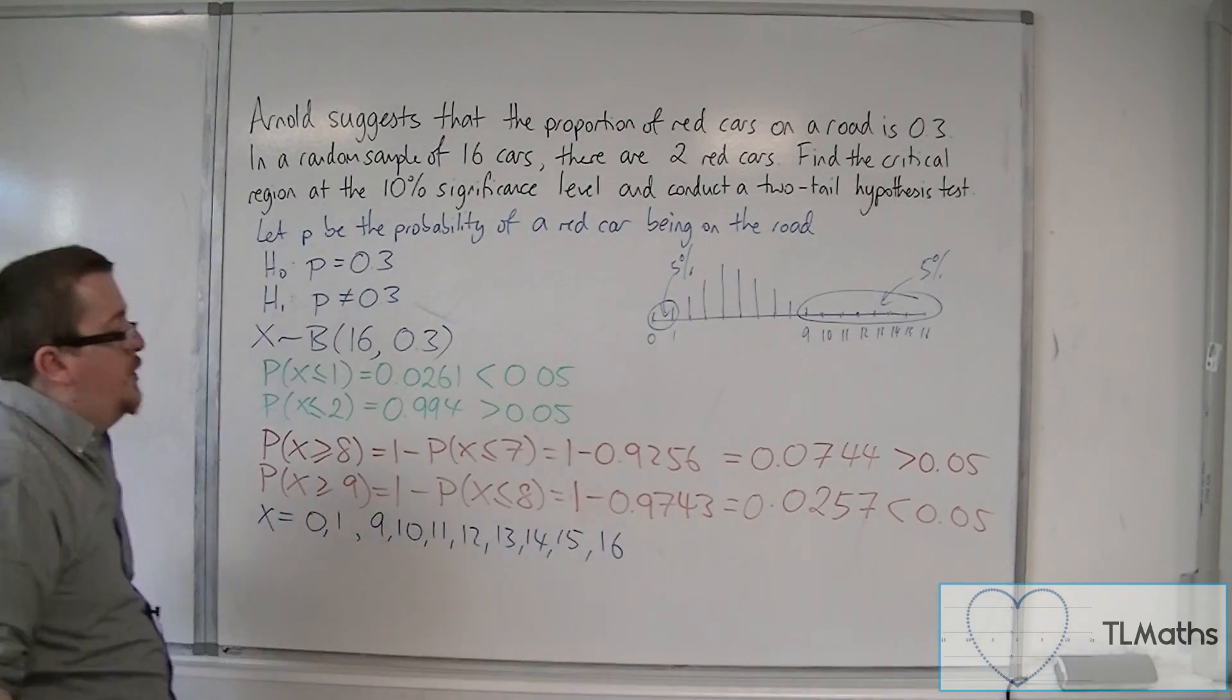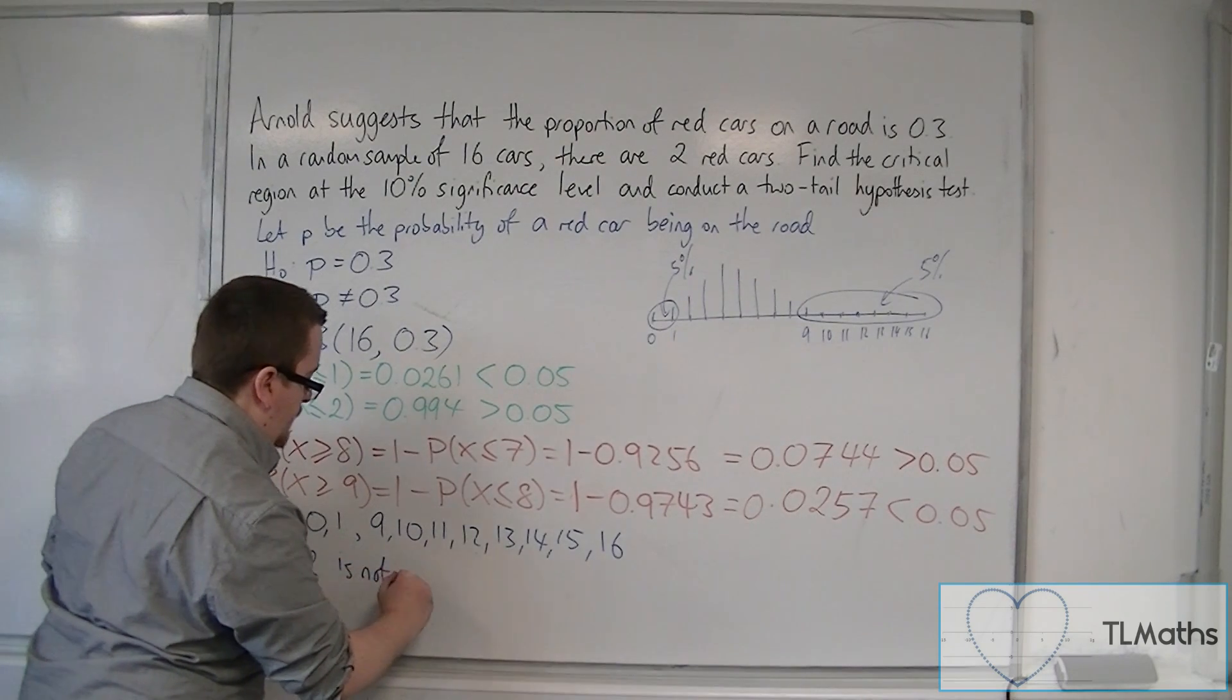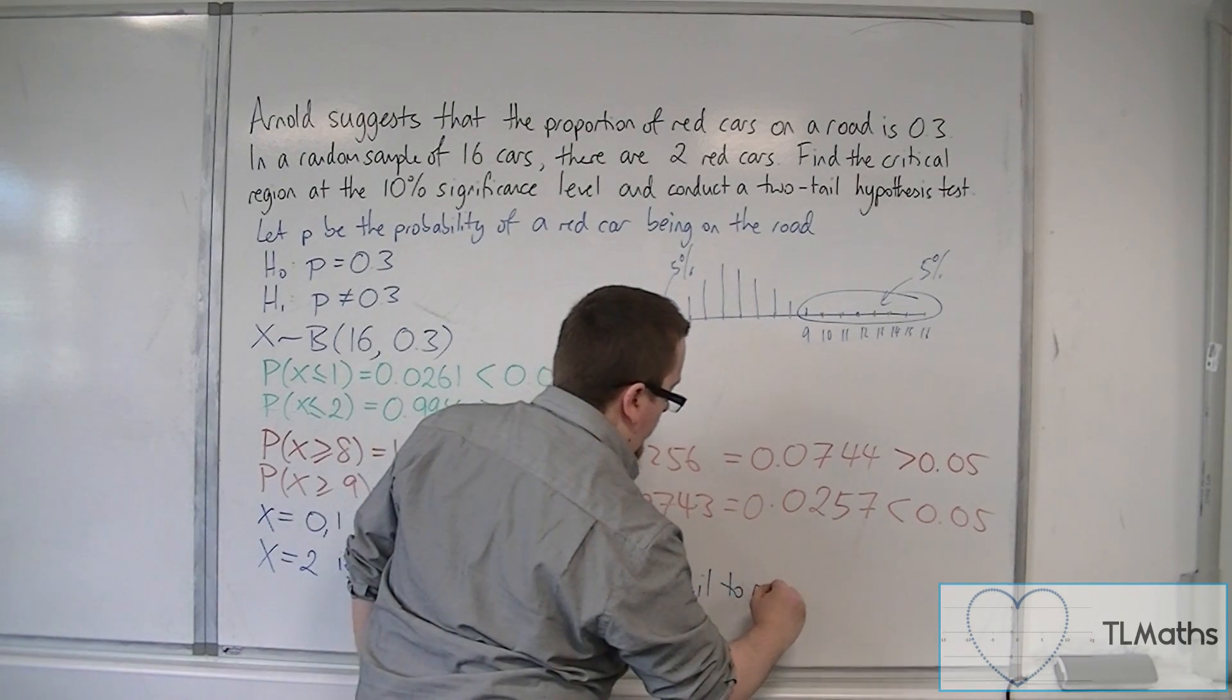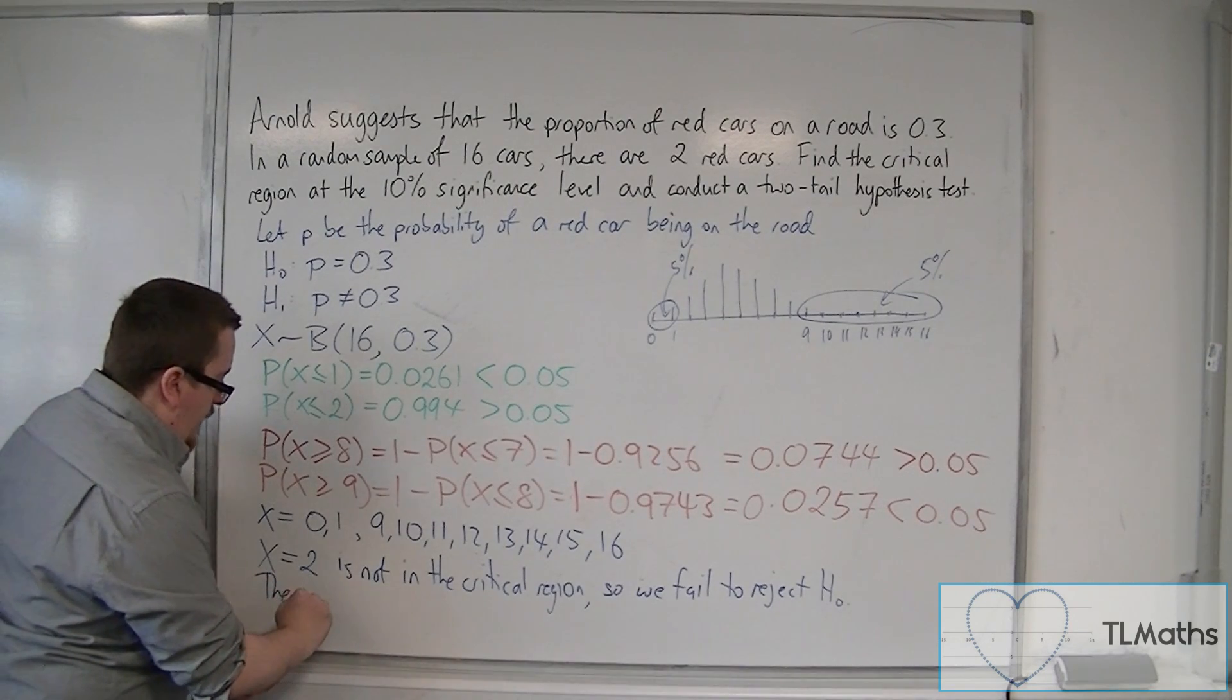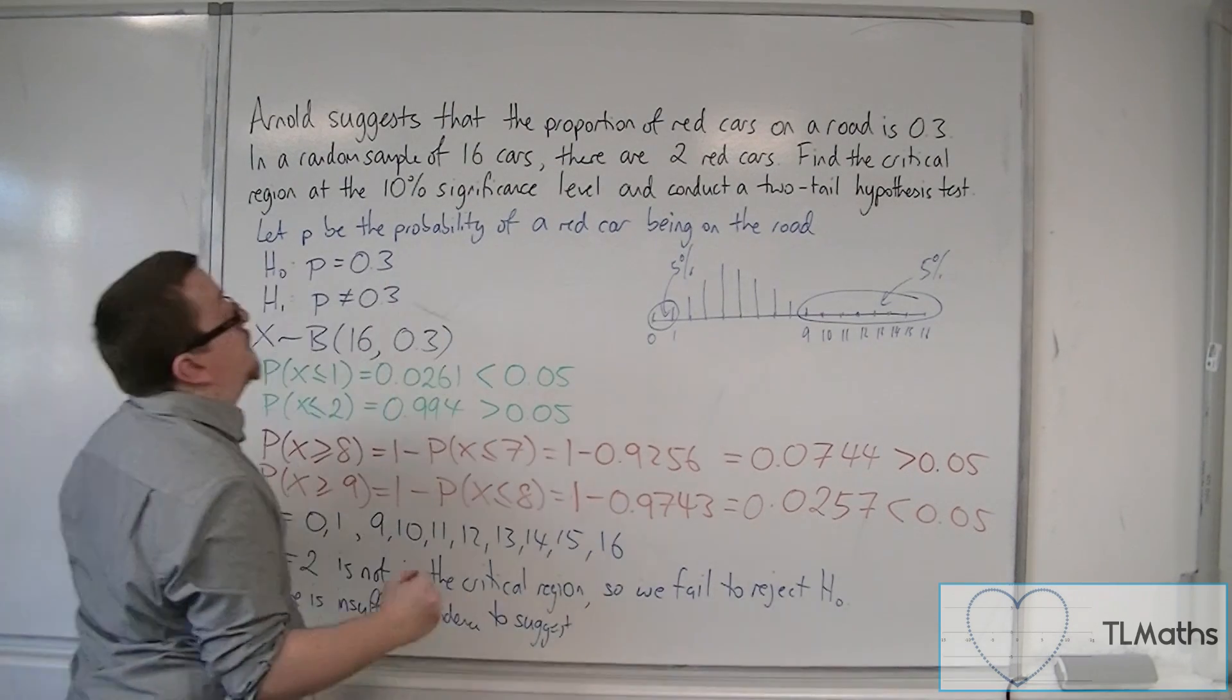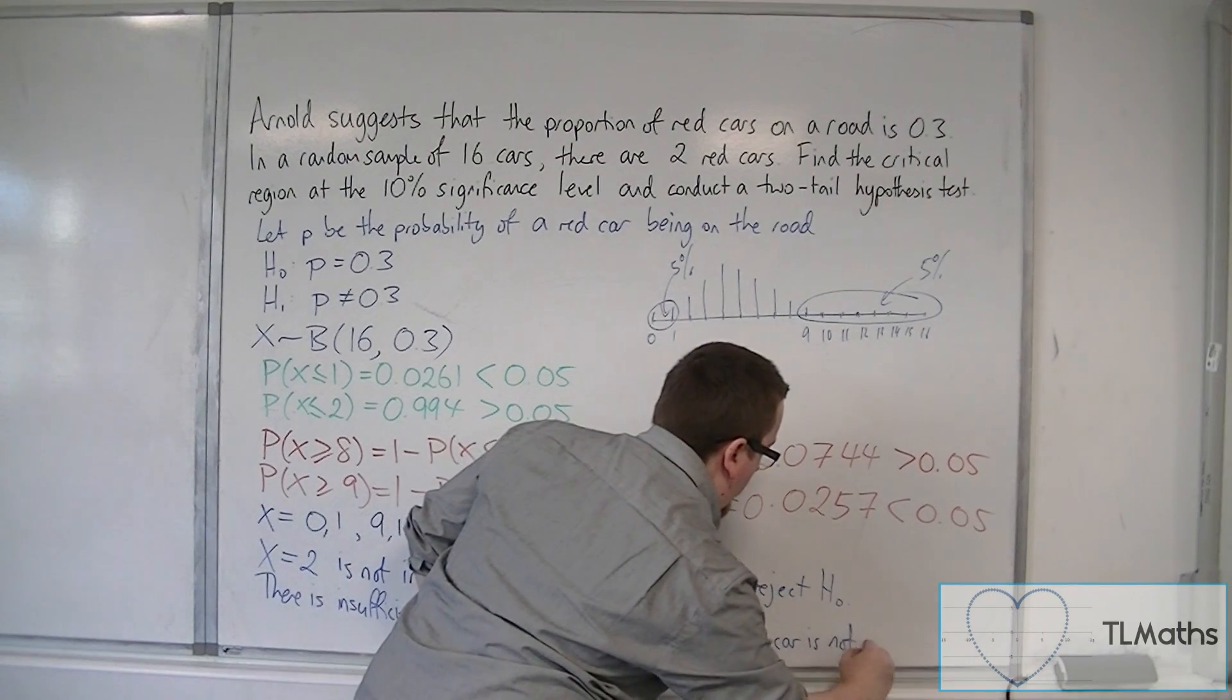So, this is the critical region. We then compare it with what we saw. We saw 2 red cars. But x equals 2 is not in the critical region. So, we fail to reject H0. In other words, there is insufficient evidence to suggest that the probability of a red car is not 0.3.